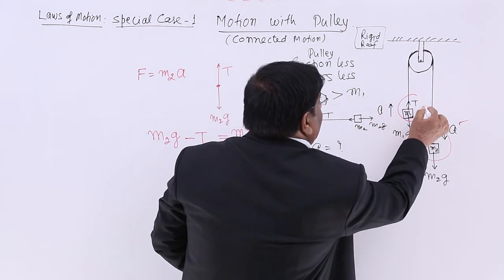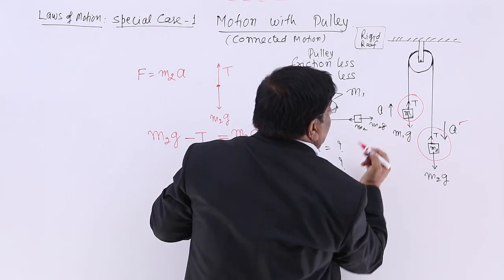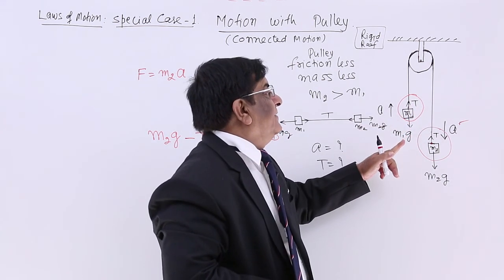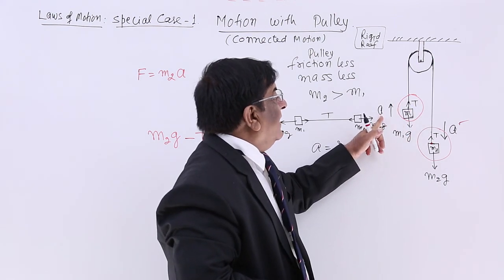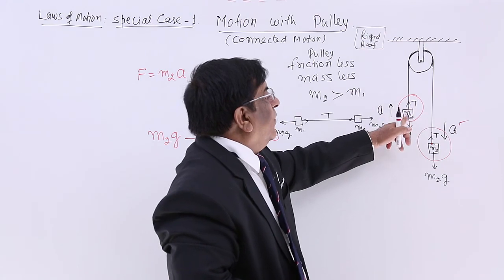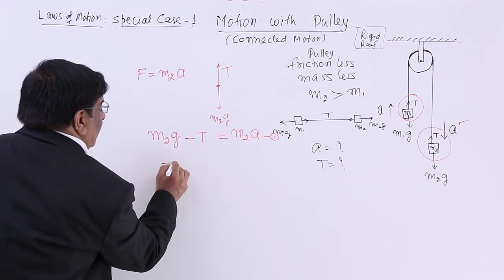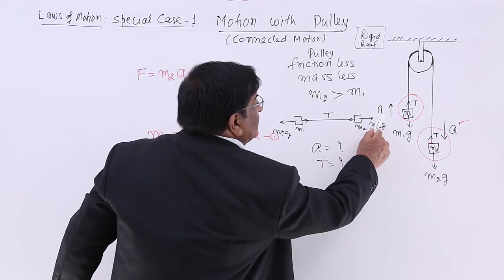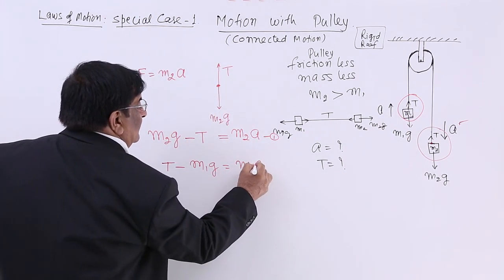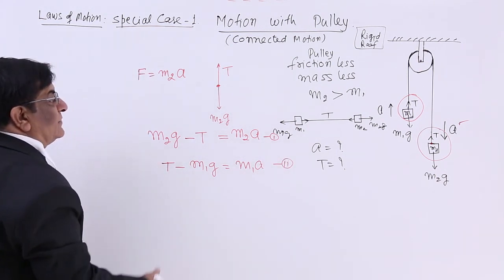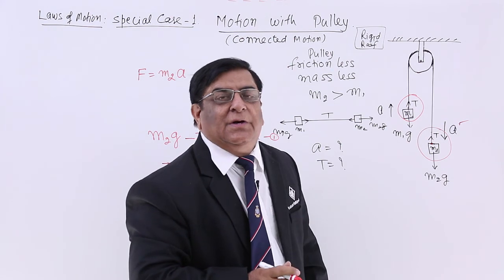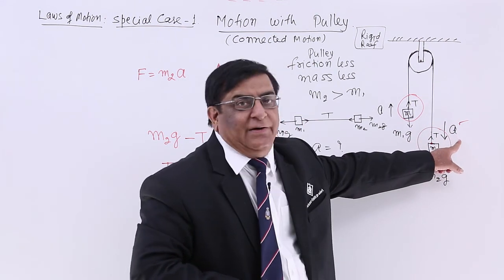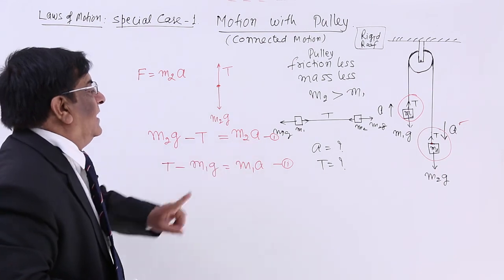Now making a free body diagram for M1: here the acceleration is upward, opposite to G. Out of T and M1G, T should be larger — that is why the body is going up with acceleration A. So the net force on M1 is T minus M1G, and net force equals mass times acceleration, which is M1A. So T minus M1G equals M1A — this is equation 2. Summing all actual forces gives the resultant force.